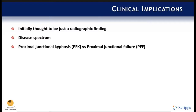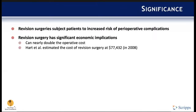It's important to differentiate proximal junctional kyphosis from proximal junctional failure. We need to quantify symptoms and assess whether this is affecting quality of life. Revision surgeries subject patients to increased perioperative complication risk and significant economic implications. In 2008, Hart et al. estimated the cost of revision spine surgery at $77,000, and costs have significantly increased since then given inflation and rising medical costs.